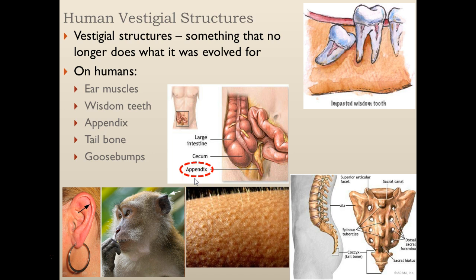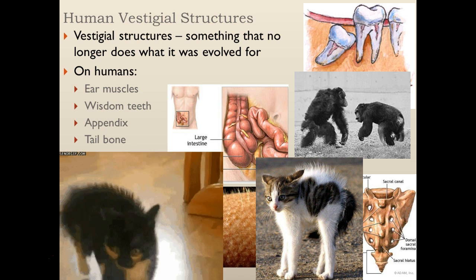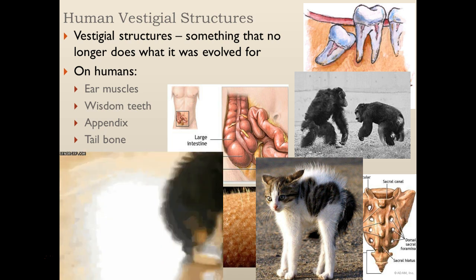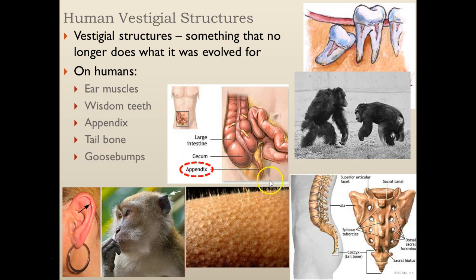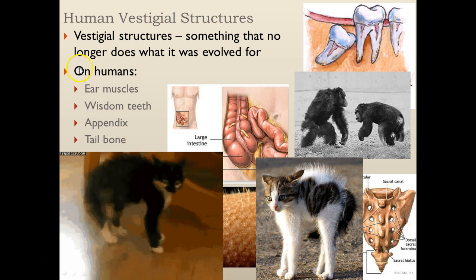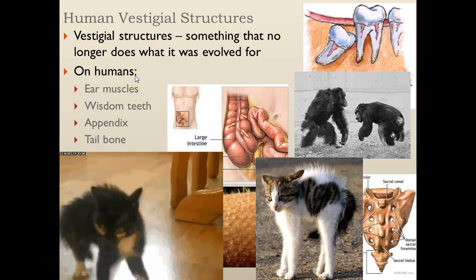Or goosebumps. You get goosebumps for one of two reasons: you're scared or you're cold. When you're scared, it puffs up and makes you appear larger — you see that in animals like chimpanzees or cats. We still get that, even though when our hair stands on end it doesn't make us appear much larger. And when you're cold, hair standing up helps trap a layer of air near your skin. However, we don't have enough hair to actually make a difference. We still have that reflex because we originally came from organisms that had more hair. This reaction no longer does what it was originally evolved for.